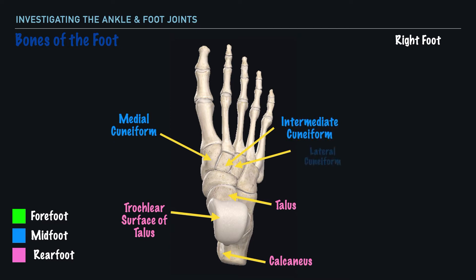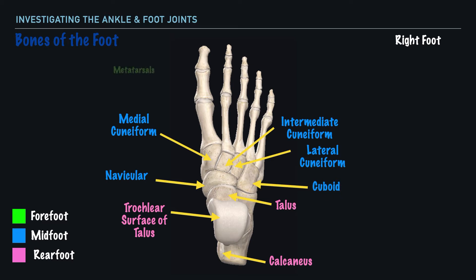In addition, we have the navicular and the cuboid. It's helpful to remember that the navicular is on the medial aspect of the foot, and the cuboid is on the lateral aspect of the foot. It's also helpful to remember that the names of the cuneiforms follow their positioning. We start with the medial cuneiform, which is on the medial aspect of the foot, followed by the intermediate cuneiform because it's in the middle, and then the lateral cuneiform because it's on the lateral aspect of the foot.